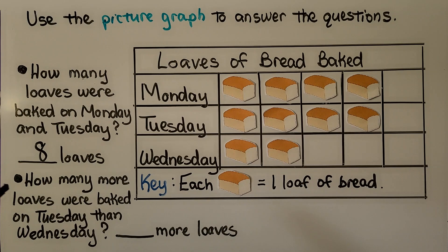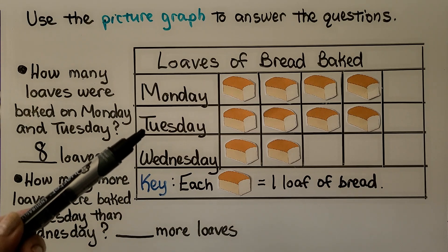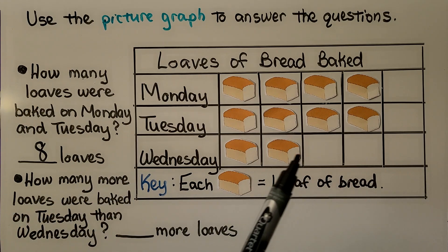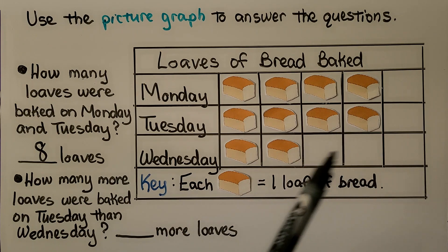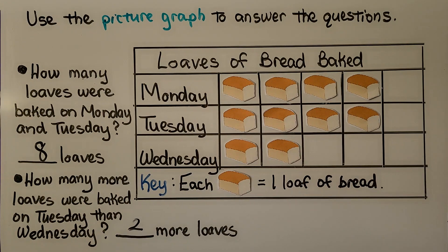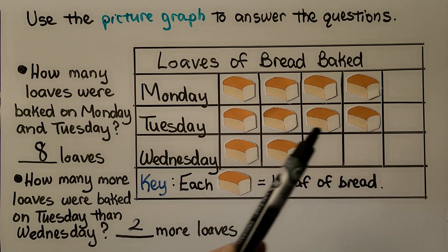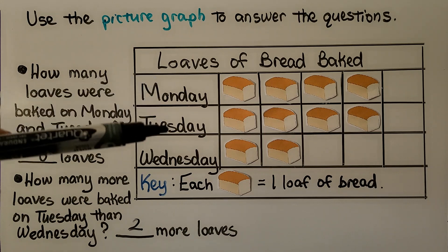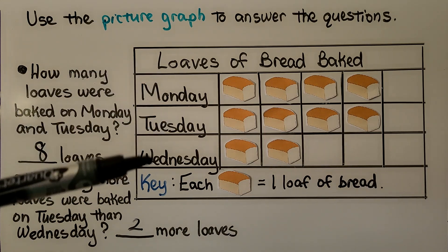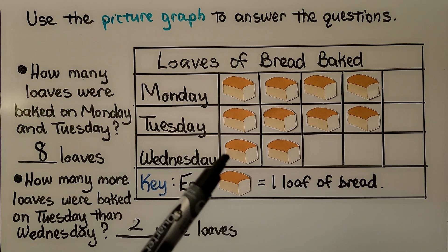How many more loaves were baked on Tuesday than Wednesday? Tuesday has four and Wednesday has two, so Tuesday has two more than Wednesday — you can see it sticking out two more. That's two more loaves. We want to be careful and make sure we're comparing the correct data; don't accidentally compare the wrong days.